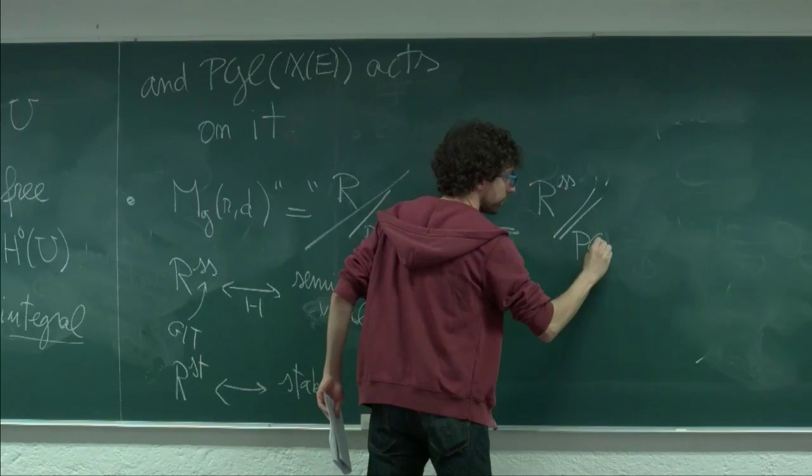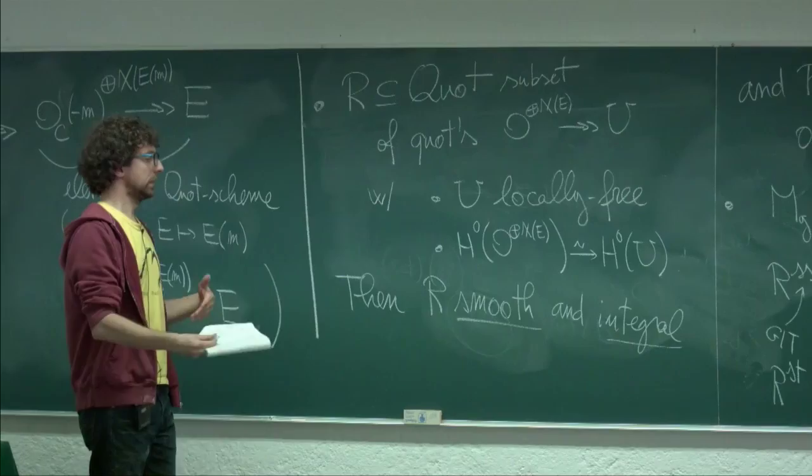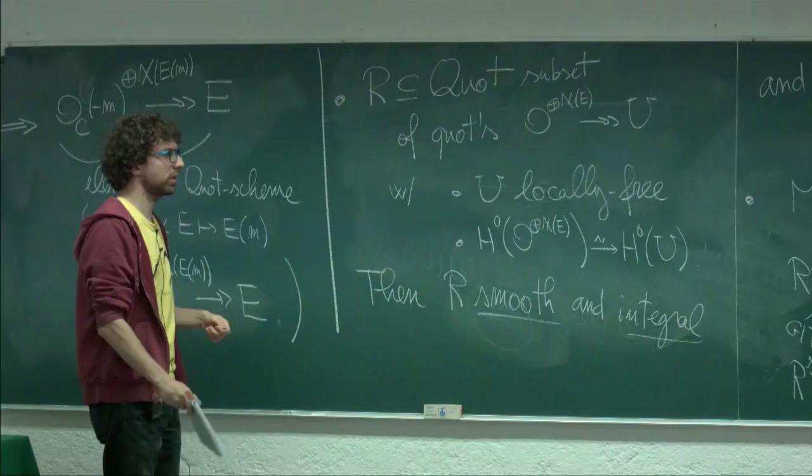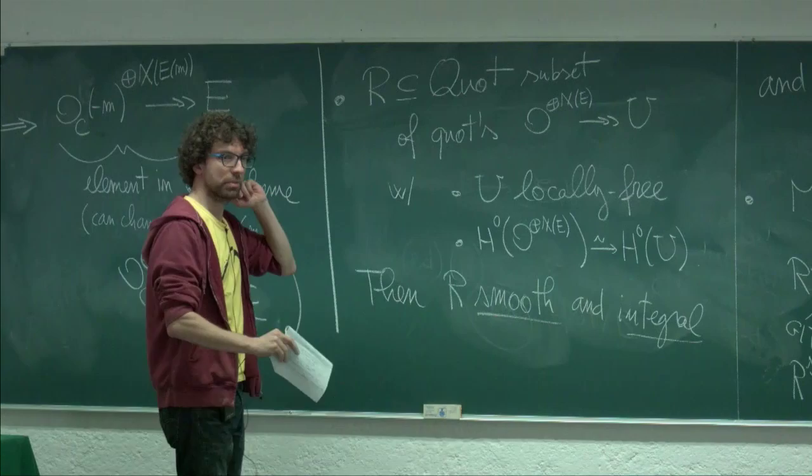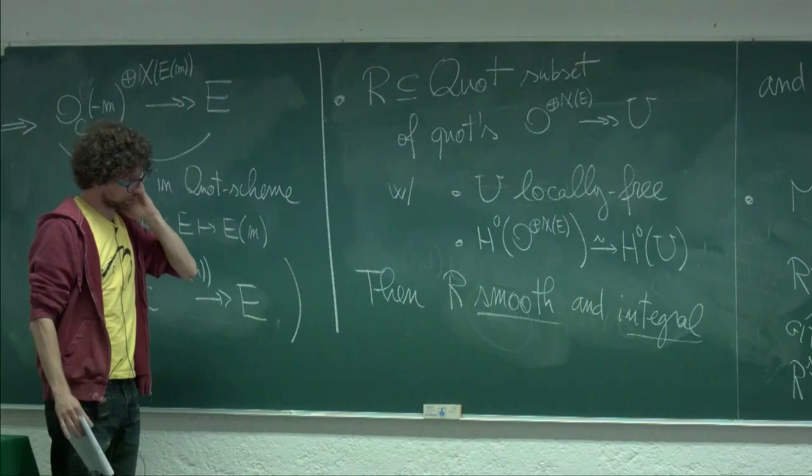Stable corresponds to stable. Our definition of numerical stability is equivalent to the definition of semi-stability coming from GIT that you saw last week. The correct notion is that M is R-semi-stable modulo PGL. That's the way to construct a space. Non-emptiness is not so hard — it comes essentially from dimension counting. The Picard group is slightly more complicated, so I'll skip that for now.